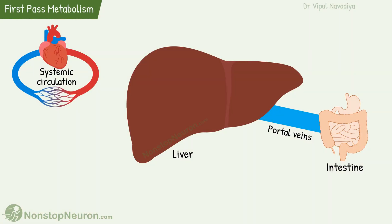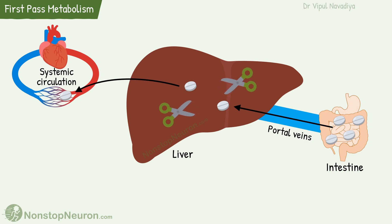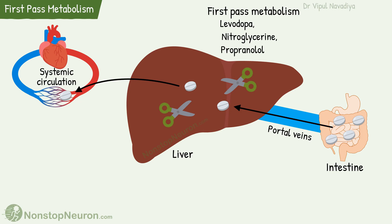The next factor is more interesting: it's first-pass metabolism. The drug absorbed from the intestine first passes through portal veins and the liver, and then enters the systemic circulation. During this passage, some portions of the drug might get degraded by metabolizing enzymes, especially in the liver. Because of this, the bioavailability of certain drugs is decreased. This degradation of a drug that occurs before it reaches the systemic circulation is called first-pass metabolism. Drugs showing significant first-pass metabolism are levodopa, nitroglycerin, propranolol, etc.